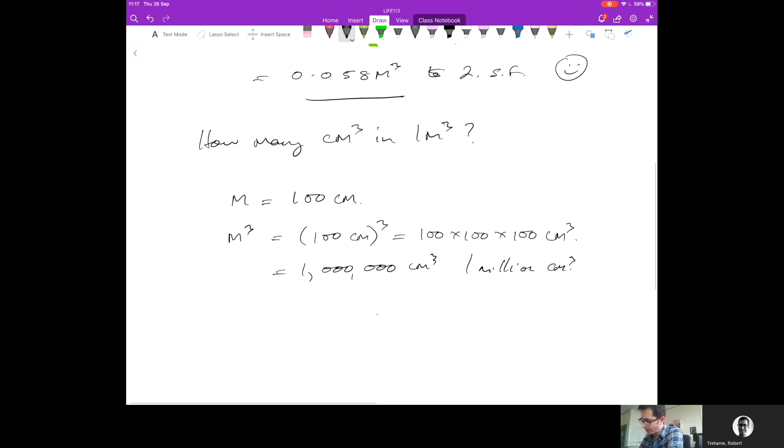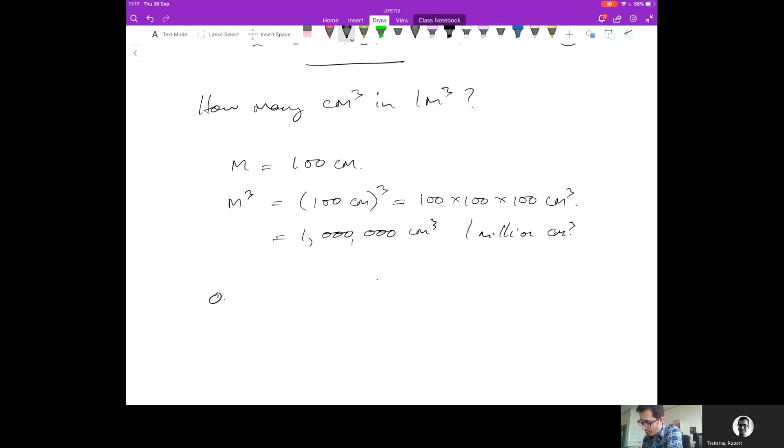One meter cubed equals a million, so I'm going to multiply 0.058 by a million. I can also write that as 10 to the power 6 using scientific notation - centimeters cubed. If you do that on a calculator, you will get the volume equal to...